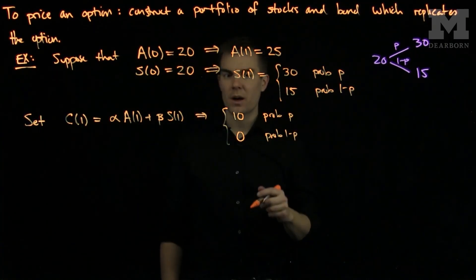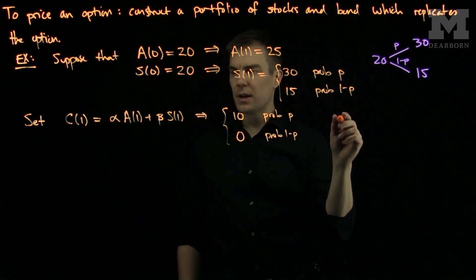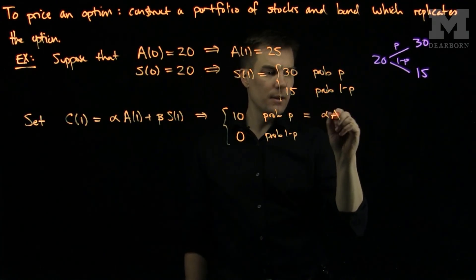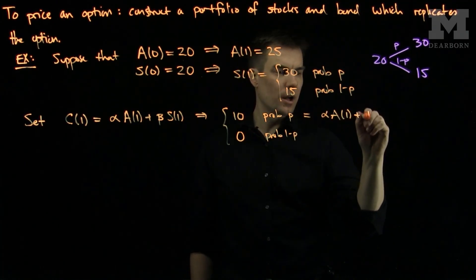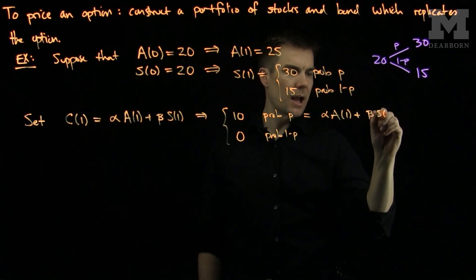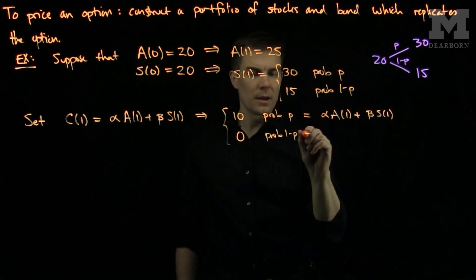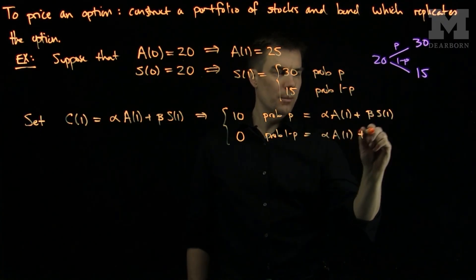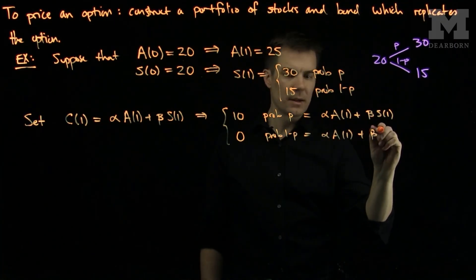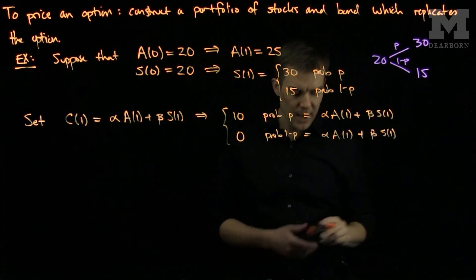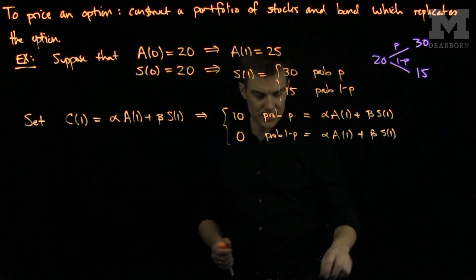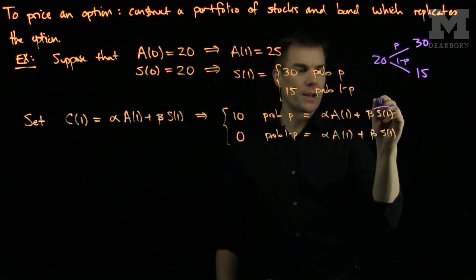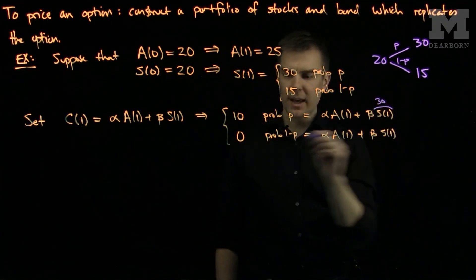So what does our system of equations become? Our system of equations becomes 10 is equal to alpha A(1) plus beta S(1). And 0 will be equal to alpha A(1) plus beta S(1). And now what are S(1) in each of these cases? In the first case, the case when we get a gain of 10, that means that S(1) has to be 30.